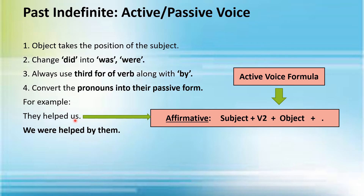Following all these four rules, I have converted 'They helped us' into its passive voice form. 'Us' is taken and it becomes 'we' in the subject position at the start of the sentence. 'We' is a plural subject, so you add 'were': 'We were helped' — 'helped' is the third form of the verb. Then you add 'by them', since 'them' is the passive form of 'they'. The passive voice is: 'We were helped by them.'